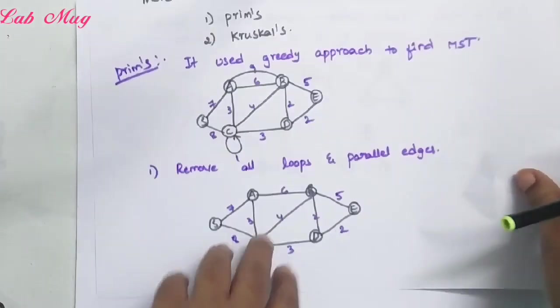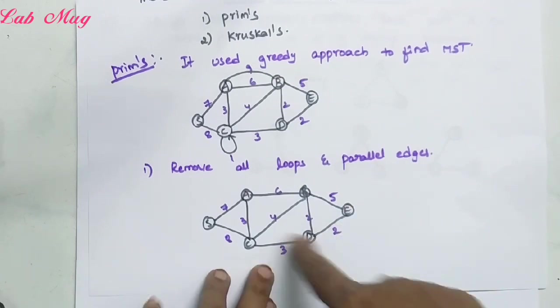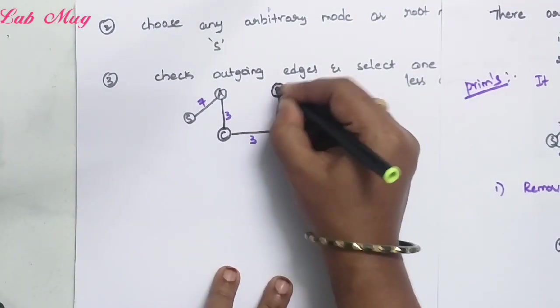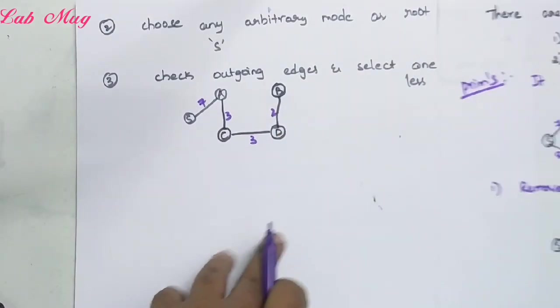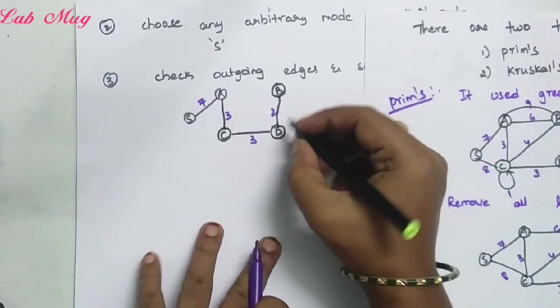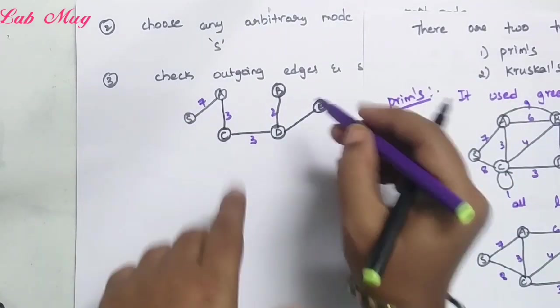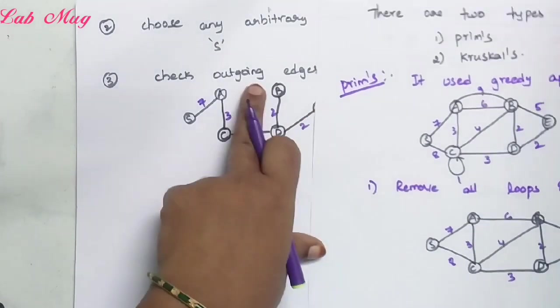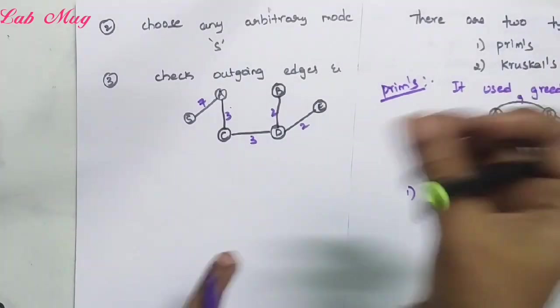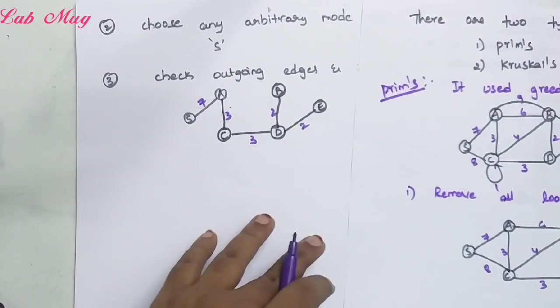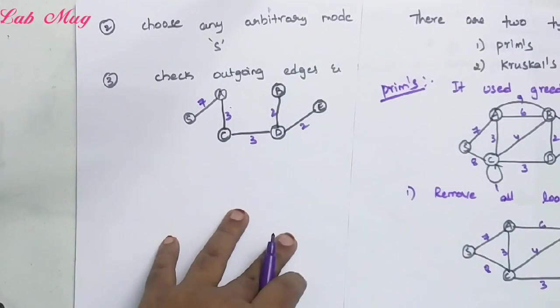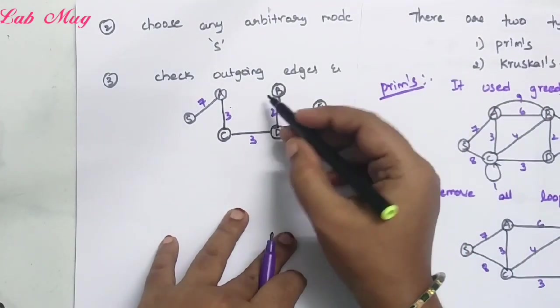After reaching D, we check edges from D: to B (weight 2) and to E (weight 2). Both have weight 2, so we take D to B first with cost 2. Then D to E with weight 2 as well. From E, there is a connection to B (weight 5), but that edge cannot be taken — there is no chance. Because taking that edge would form a loop — a connection — in the graph. Based on minimum spanning tree rules, a connection (loop) must not be formed. So we cannot take that edge.